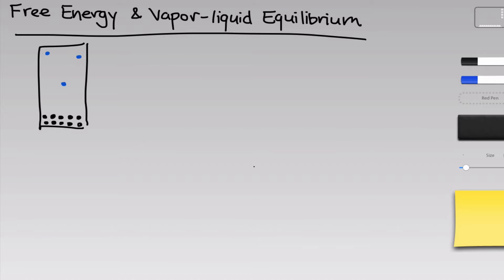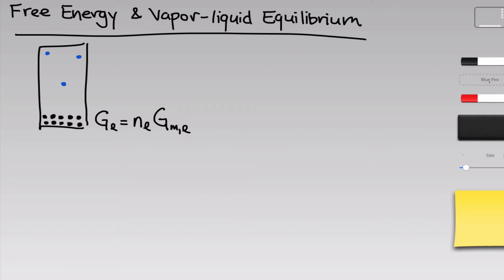Let's imagine we started with a hypothetical closed system containing 10 moles of liquid, drawn as black circles at the bottom of the system, and 3 moles of vapor, drawn as blue circles bouncing around in the headspace above the liquid. We can write free energies for each of these phases using the molar free energy of each phase. The total free energy of the liquid equals the number of moles of liquid times its molar free energy, and similarly, G for the vapor phase equals the number of moles of gas times the molar free energy of the gas.